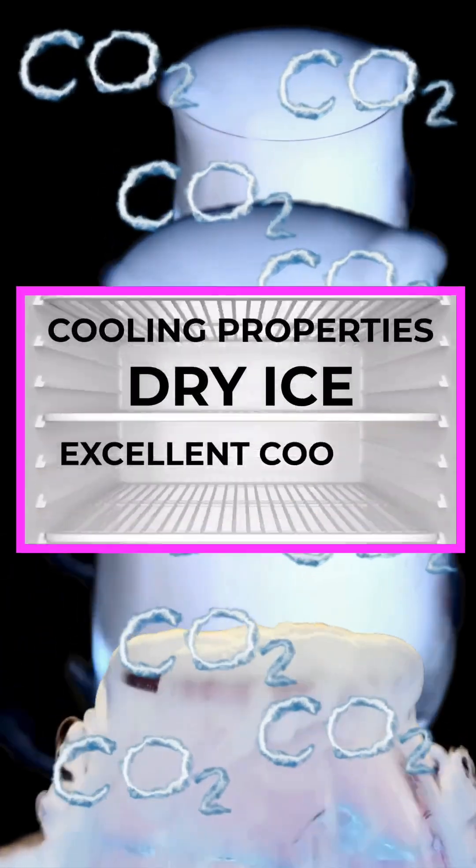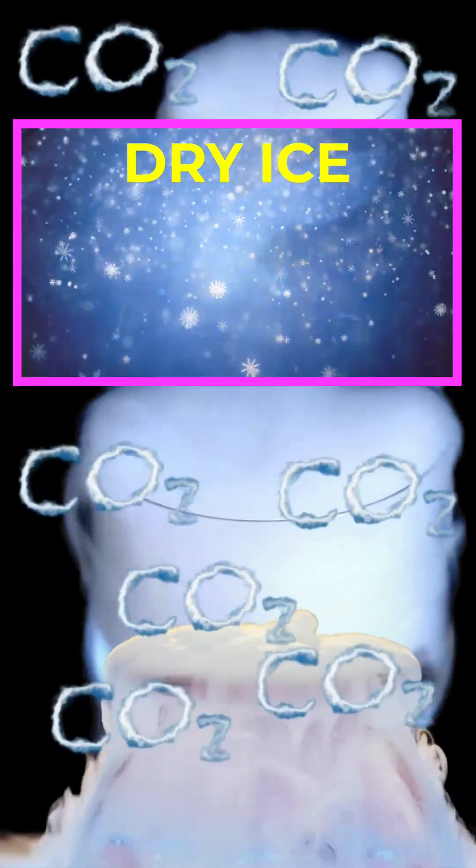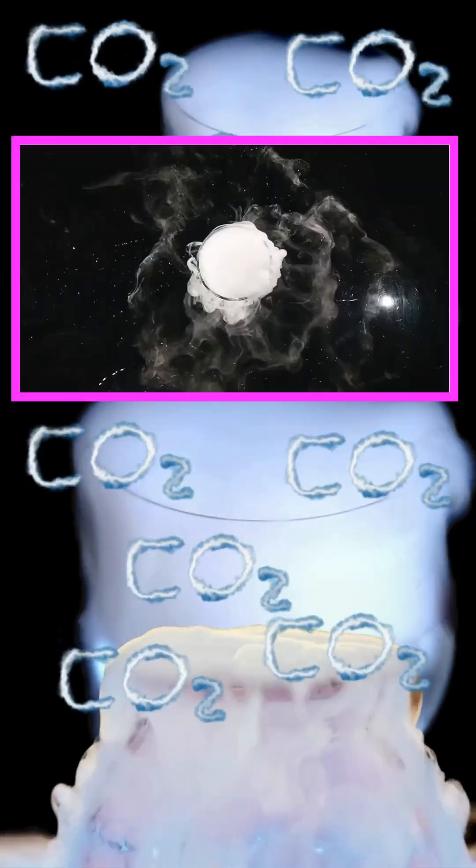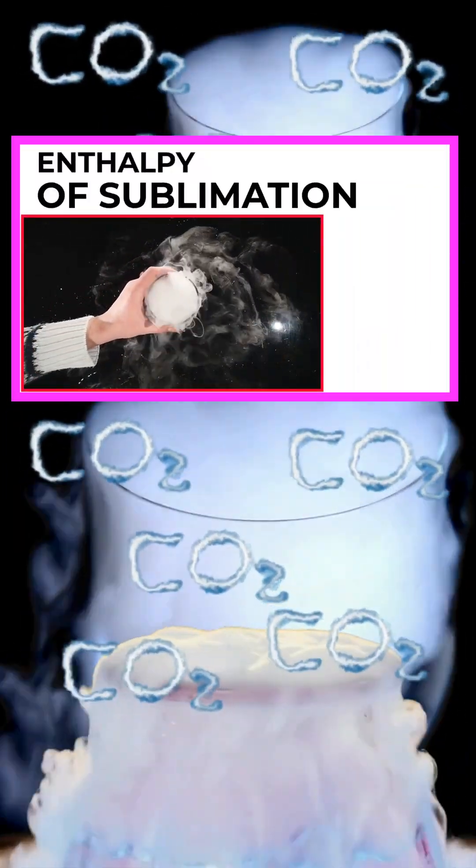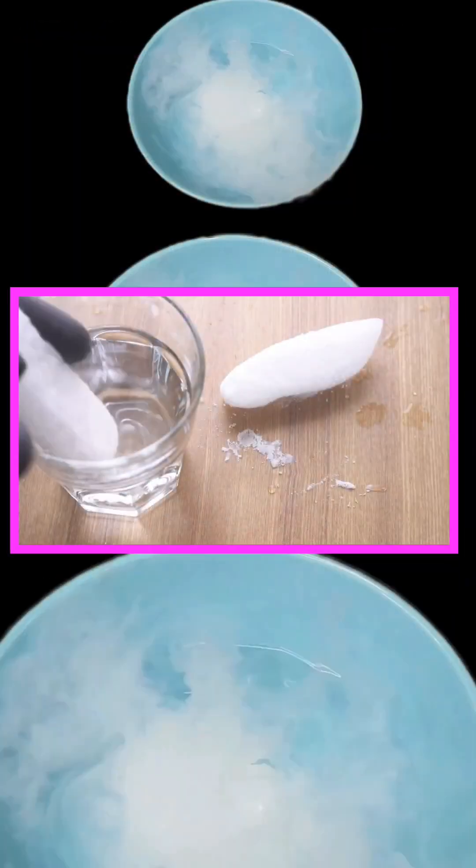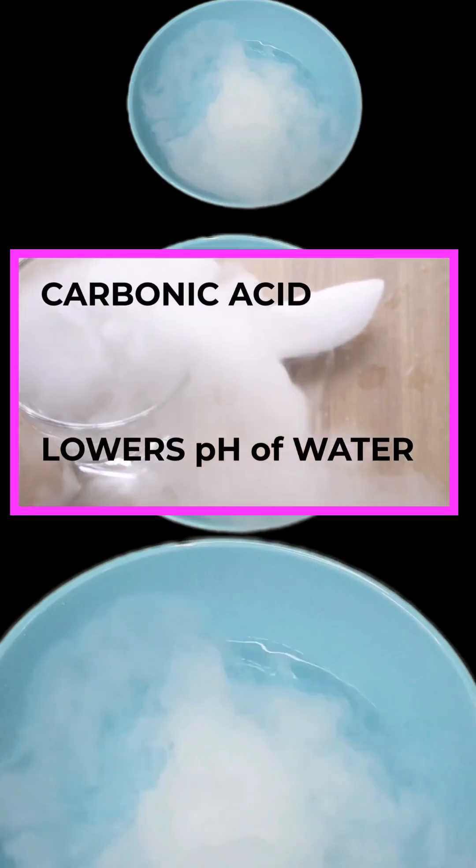The cooling properties of dry ice. It is an effective coolant because it is colder than water ice and leaves no residue as it changes state. Its enthalpy of sublimation is 571 joules per kilogram. When dissolved in water, it can lower the pH, forming carbonic acid.